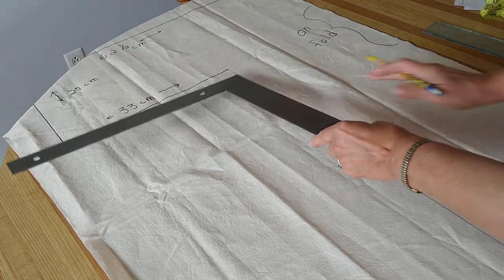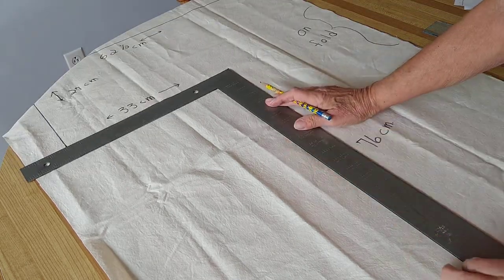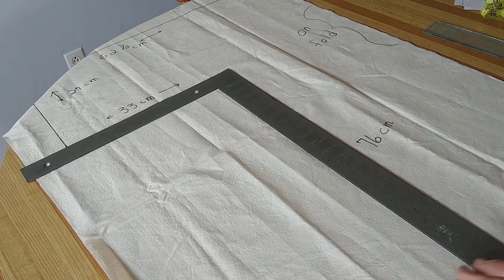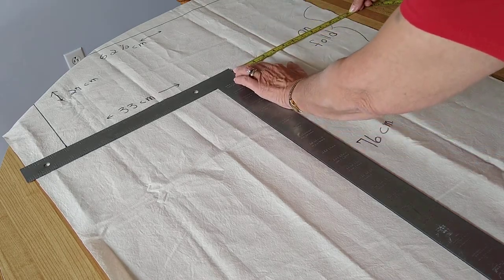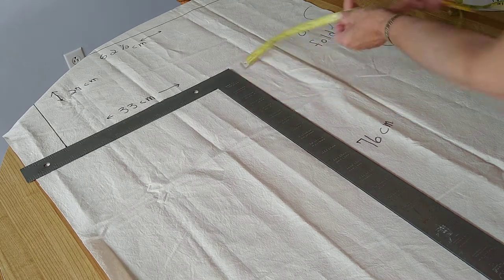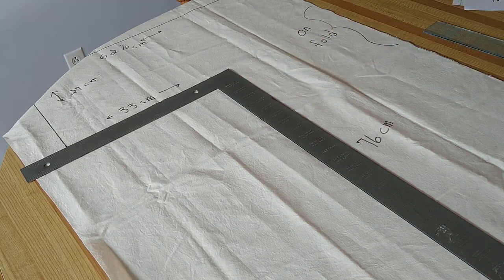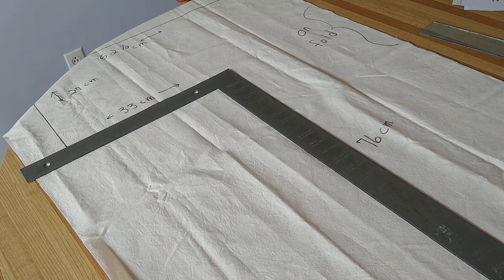Now we're going to take the t-square and turn it. This will be about 29 centimeters. Check it at the bottom as well.